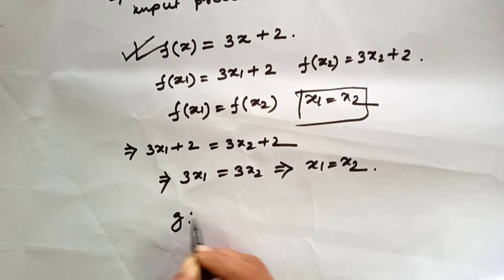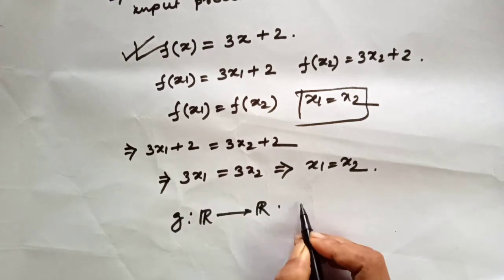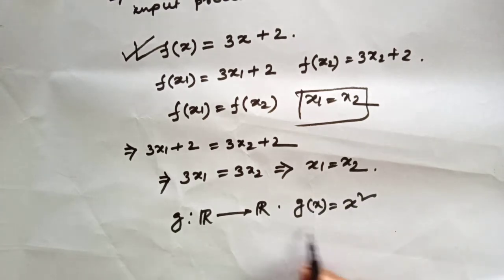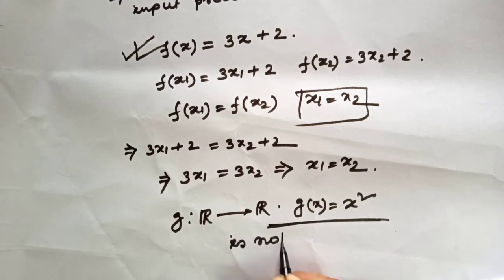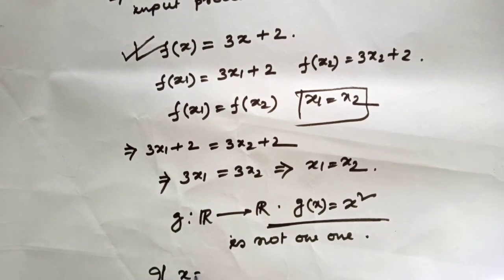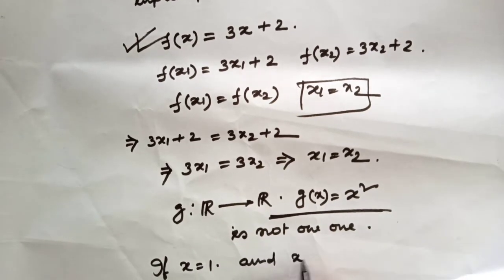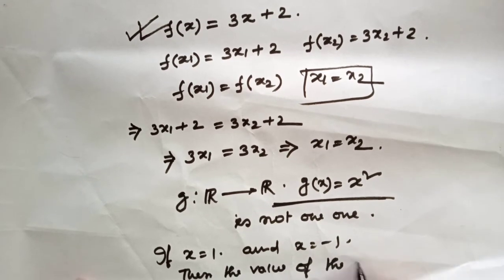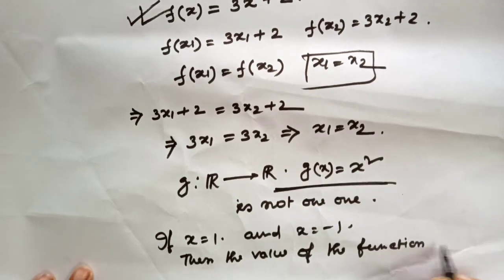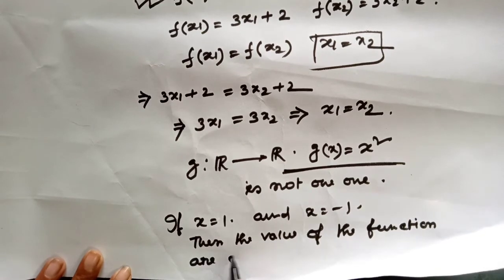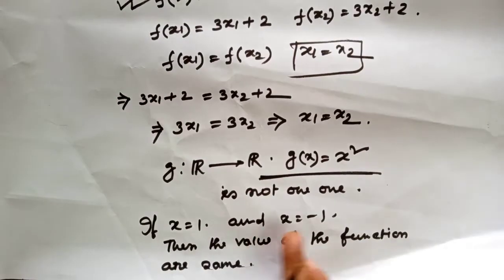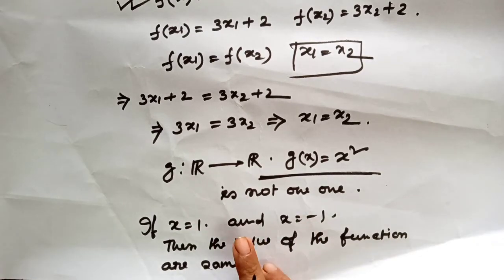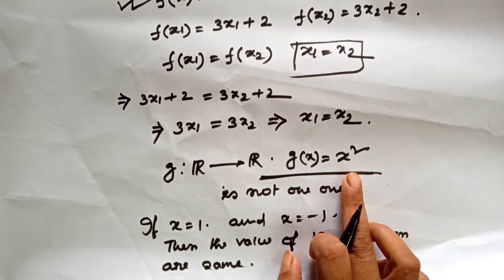Consider another function f from R to R defined by f(x) = x². This function is not one-one. Why? If x1 = 1 and x2 = −1, the value of the function is the same. Here the points are different but the image is the same, so this function is not one-one.